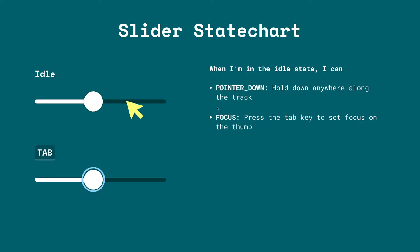We're going to look at the state charts and how you can send events within the state machine. When we're in the idle state, we can send a pointer down event, which means the user holds anywhere along the slider track — this sets the value of the slider to match that point where the mouse went down. The second event is focus, which means pressing the tab key sends the slider to the focus state.